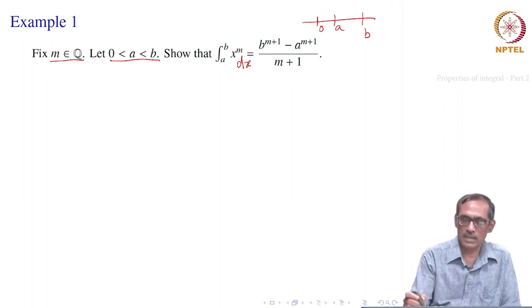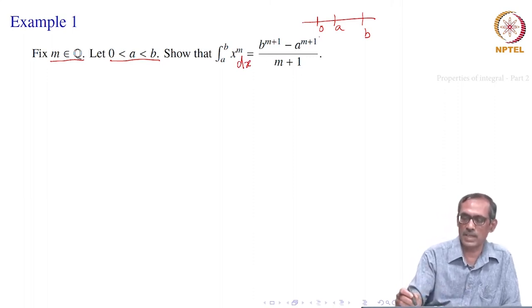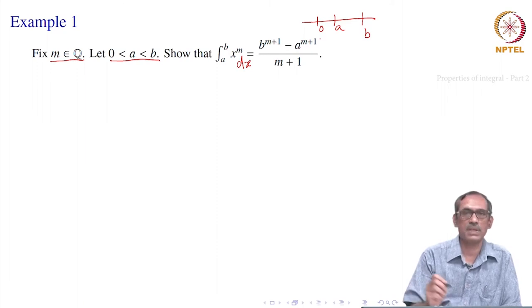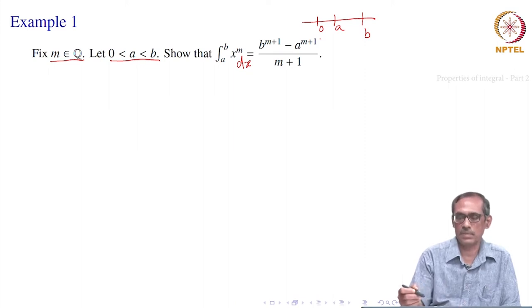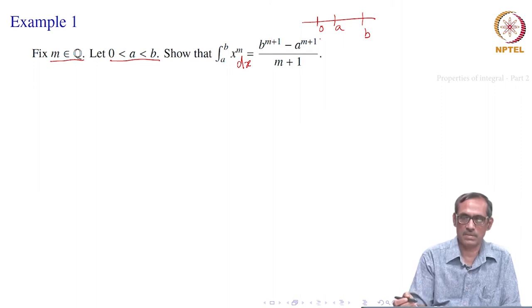That integral is equal to (b^(m+1) − a^(m+1)) / (m+1). To show this, you have to really compute: find the Riemann sum, take the limit, and see that it equals this result. Let us see how we proceed.